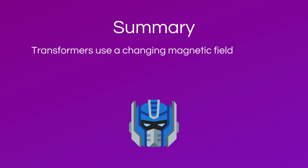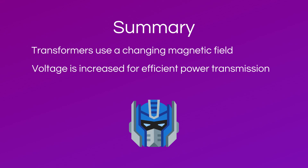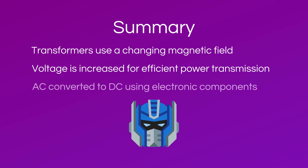In summary, transformers use the changing magnetic field created from alternating current to increase or decrease the voltage. The voltage is increased to enable more efficient power transmission using a step-up transformer, and decreased to a usable voltage by a step-down transformer. The AC voltage can then be converted to DC voltage using electronic components.